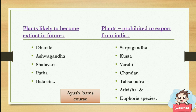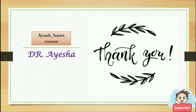Plants which are prohibited from export from India are Sarpagandha, Khusta, Varahi, Chandan, Ativisha, and Euphorbia species. It is the responsibility of every citizen to identify such medicinal plants which are going to become extinct and preserve them.